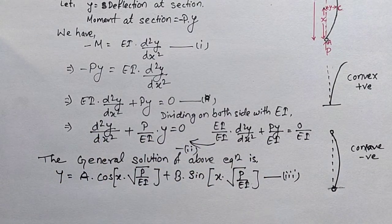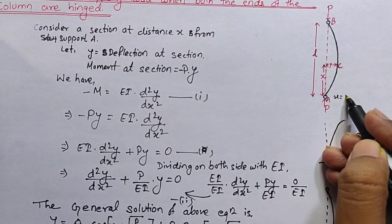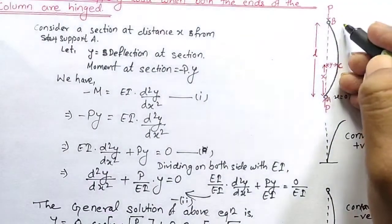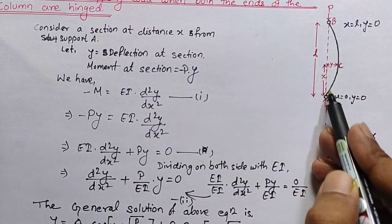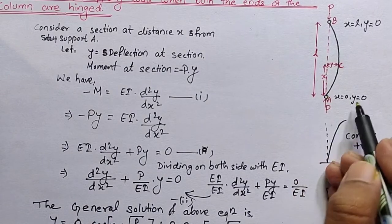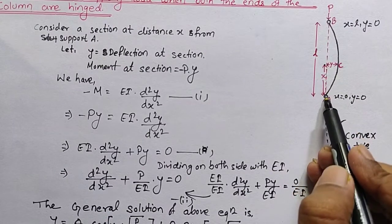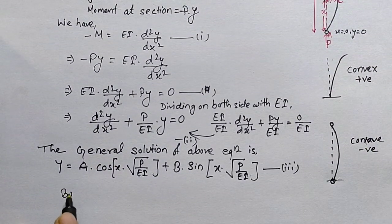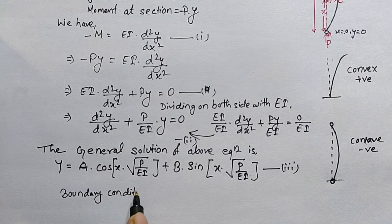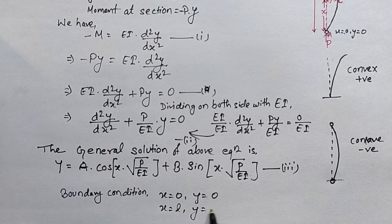In this column we have two boundary conditions. First, at support A: x = 0, y = 0. Second, at the other end: x = L, y = 0. Here x is the span or length of the column and y is the deflection, so at both supports the deflection is zero. We will apply these two boundary conditions to Equation 3 to find the further solution.